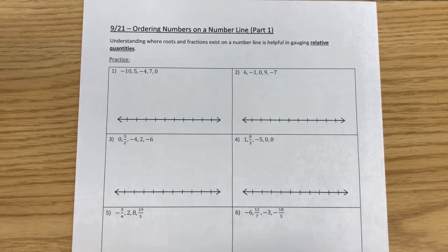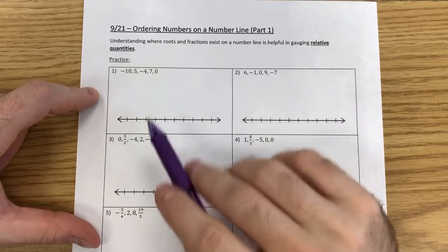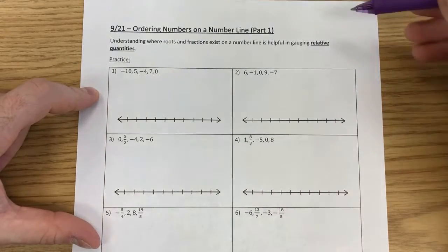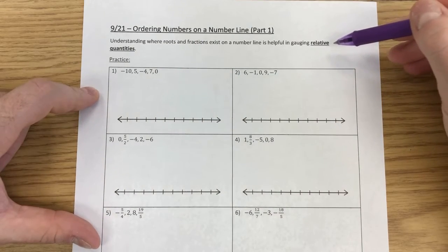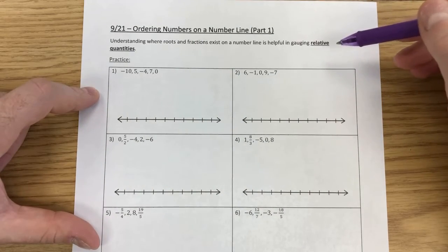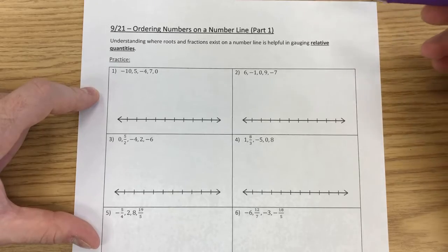Today we're going to be using what we've learned thus far to put numbers in order on the number line. This is important because we want to gauge the relative aspect of each number in relation to another number.